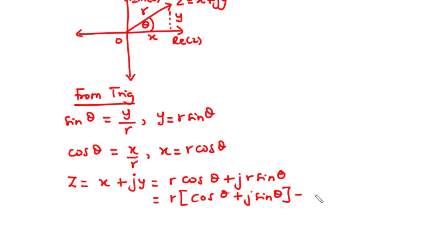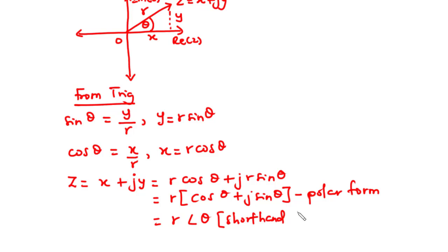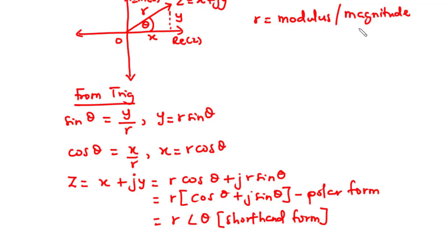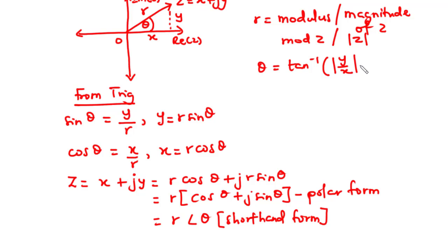This is called the polar representation of the complex number, and it can be written in shorthand as r∠theta. Here, r is referred to as the modulus or magnitude of z, written as |z|. Theta is given by tan inverse of the absolute value of y divided by x, and this angle theta is referred to as the argument or amplitude of z.